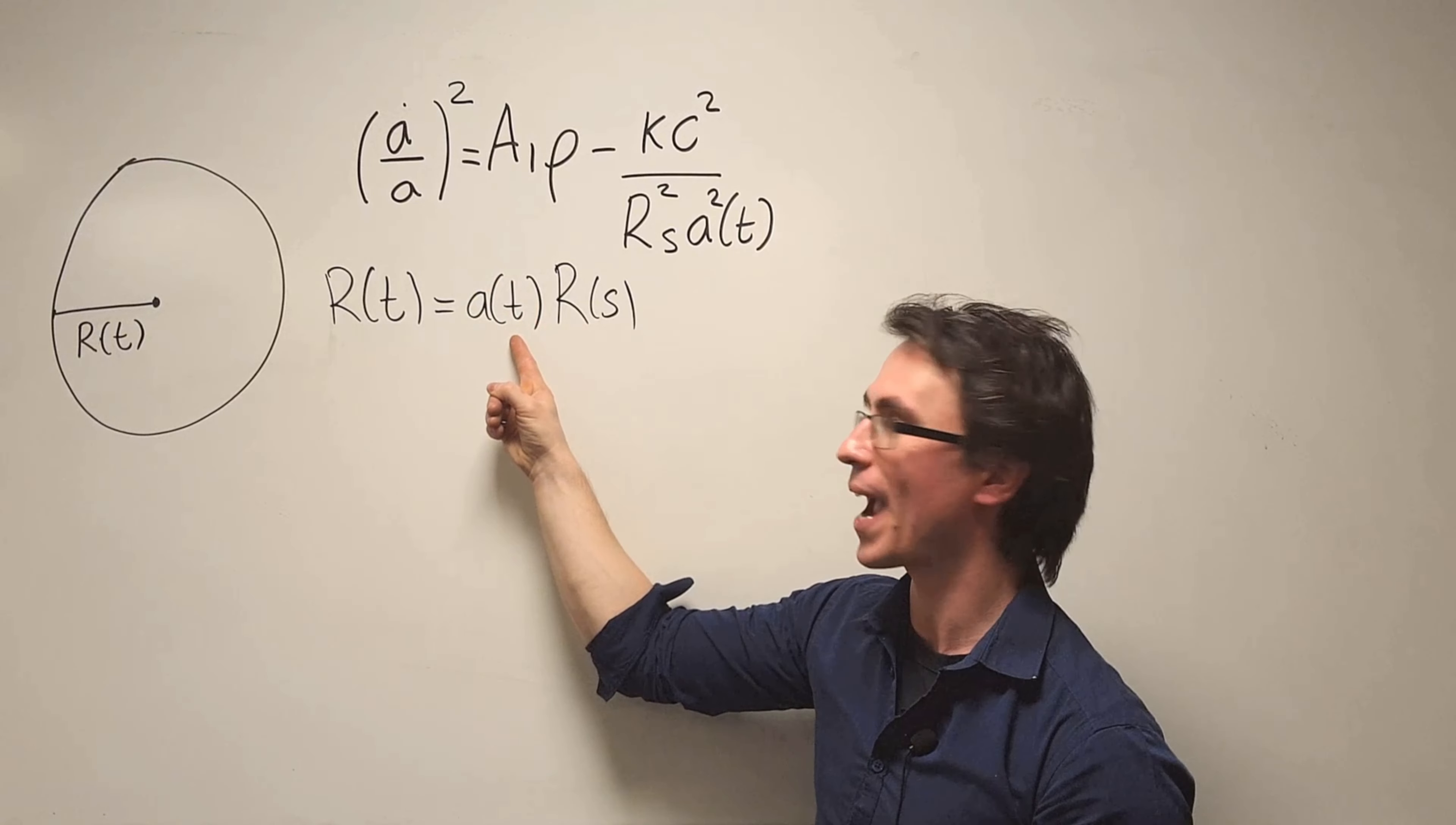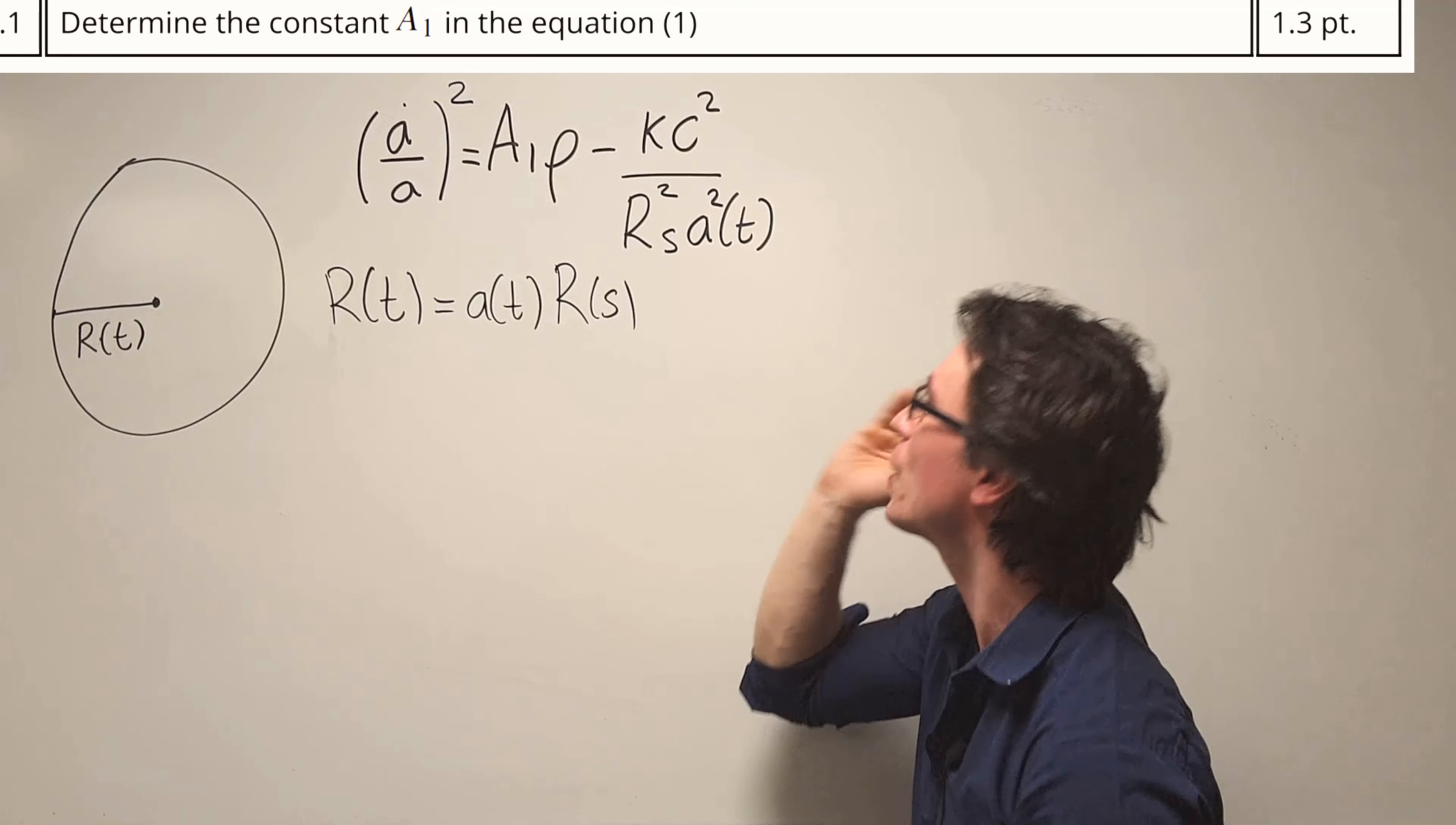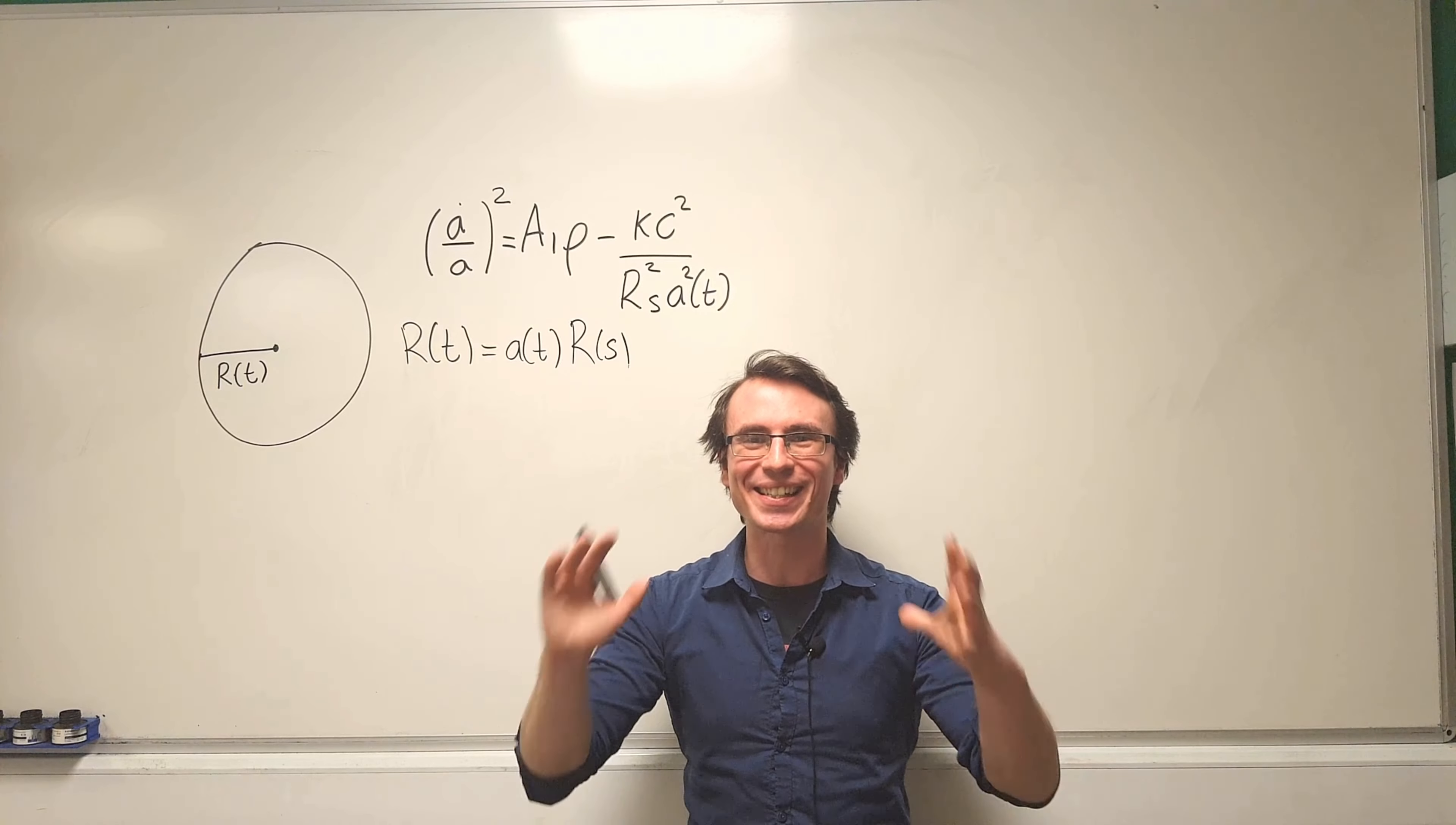The radius of the sphere R(t) can be represented by a scale factor A(t) which only depends on time and a spatial factor R(s) which only depends on space. Our task is to determine the value of the constant A1 in this famous equation known as the Friedman equation.